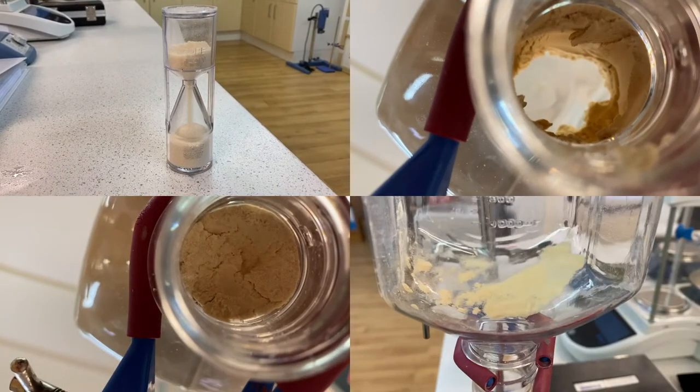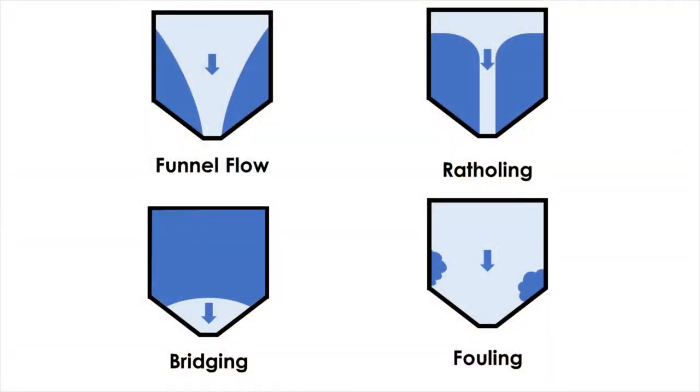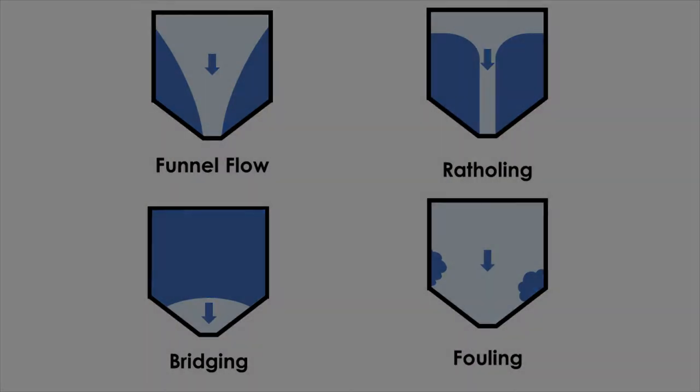Funnel flow, rat holing, bridging and fouling are all common undesirable consequences of high wall friction between a powder and a processed surface.